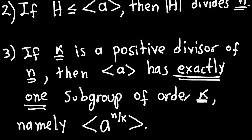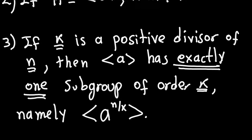The third part, which we're going to emphasize most here, talks about how to find all the subgroups of a group. So let's look at the statement. If K is a positive divisor of N — where N is the order of the cyclic group — then this cyclic group has exactly one subgroup of order K. And that subgroup is generated by A to the N divided by K. This N divided by K is going to be an integer because K divides N.